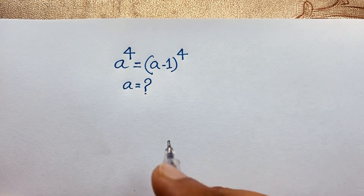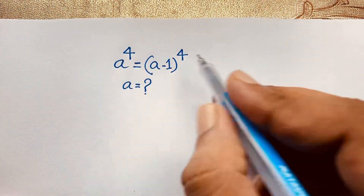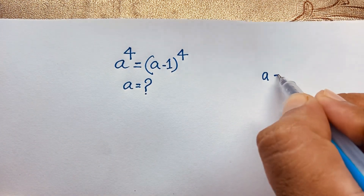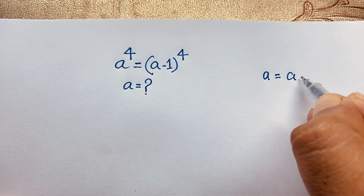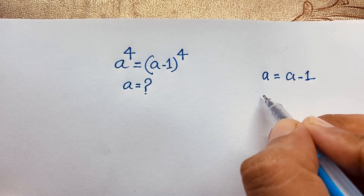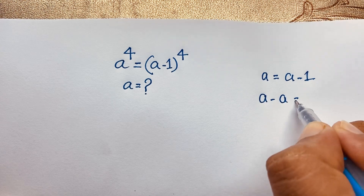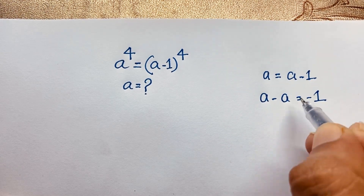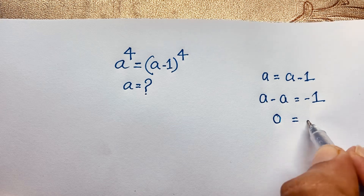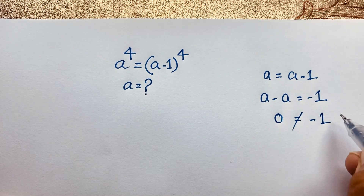I solved this question using an easy method. First of all, you can easily cancel the power 4 on both sides. It will be a is equal to a minus 1. Then if I move this term to one side, it will be a minus a is equal to negative 1. Then a minus a gives 0, which means 0 is equal to negative 1. So 0 cannot be equal to negative 1.